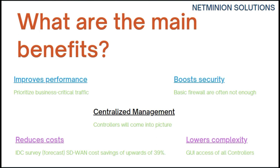SD-WAN also brings a nice set of additional features. It improves performance: the solution is configured to prioritize business-critical traffic and real-time services like VoIP, facilitating critical applications through reliable, high-performance connections, ensuring reduced packet loss and latency. Centralized management means that when the same task needs to be done on hundreds of devices, it requires a lot of time, effort, and money. GUI-based controllers help mitigate these risks and reduce the chance of mistakes.